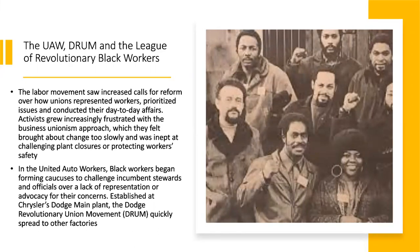With all this going on, the labor movement starts to see increased calls for reform over how unions represent workers. Activists began calling for unions to prioritize issues that challenge wider problems workers face in society, rather than day-to-day business union affairs. In the United Auto Workers, one of the best examples of these rank-and-file rebellions is workers getting together to challenge their own union.